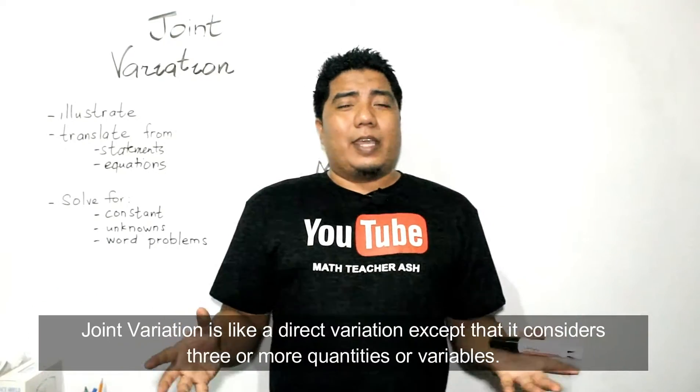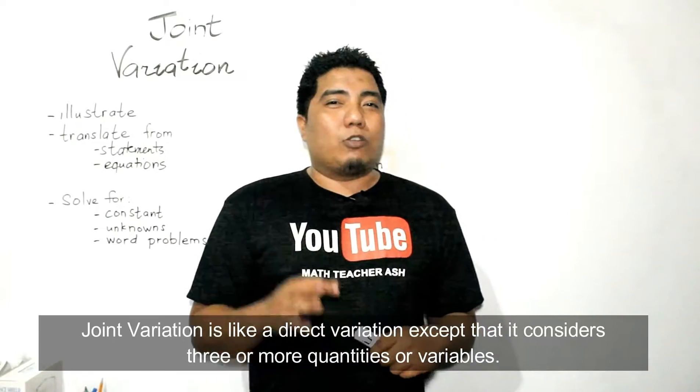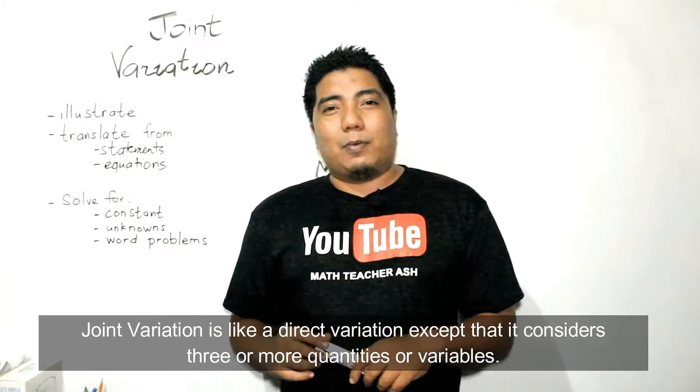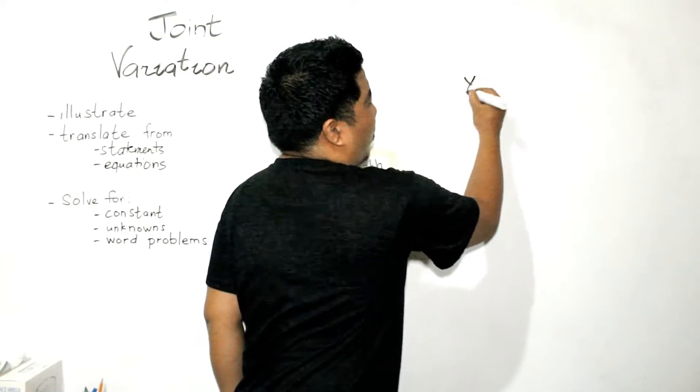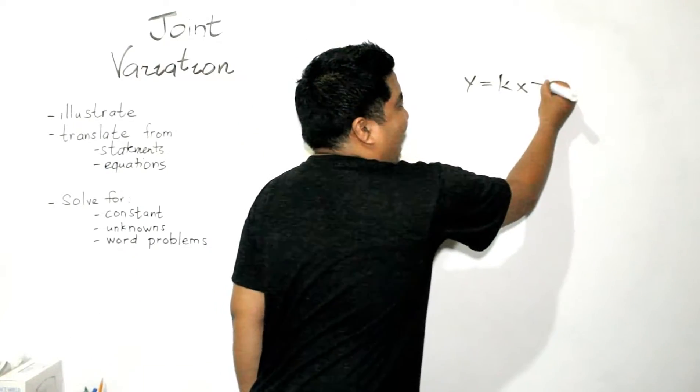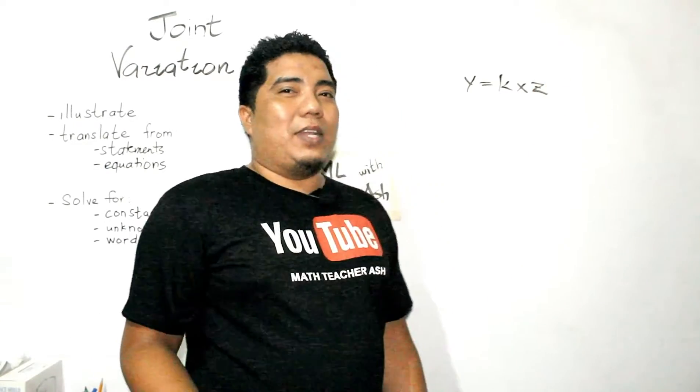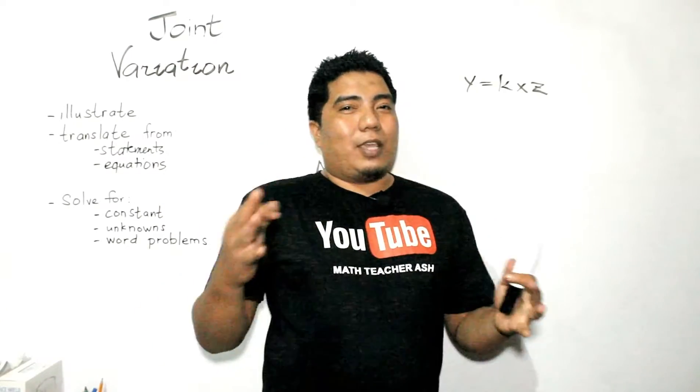Joint variation is basically the same as the direct variation. However, it talks about three or more variables. It means that if your direct variation has y is equal to kx, in the joint variation, we will add at least one variable, making it three variables. Or three quantities.